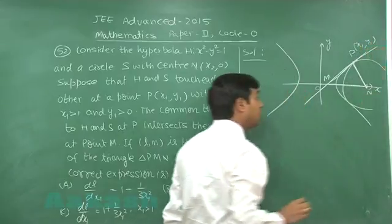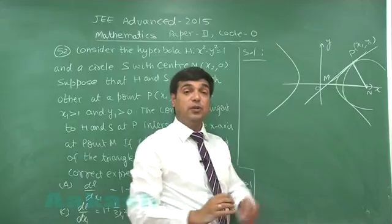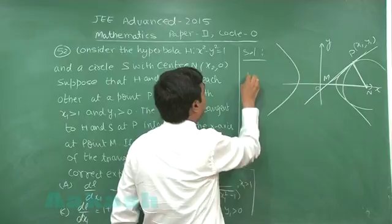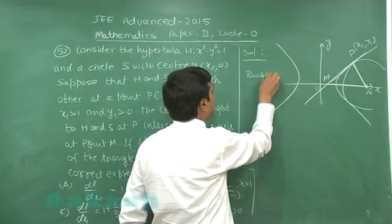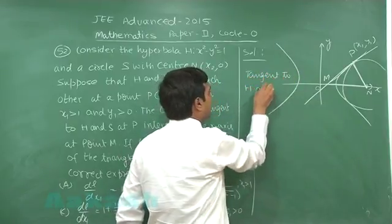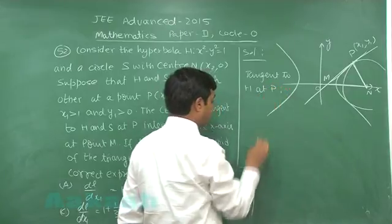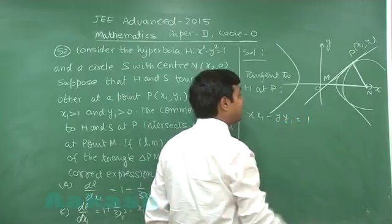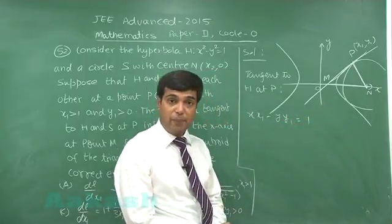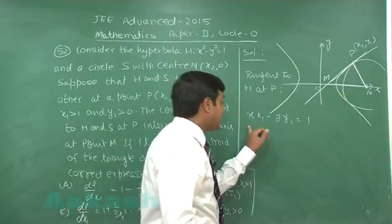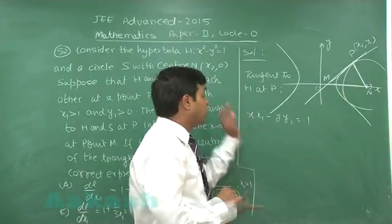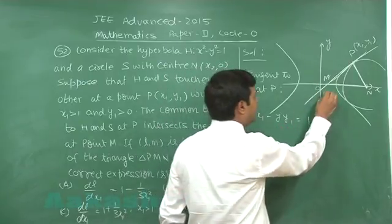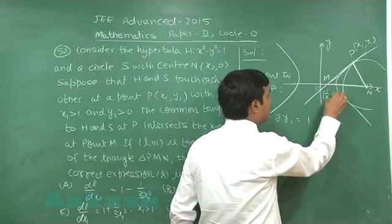We write the equation of the tangent to the hyperbola H at P. The tangent to H at P is: x·x₁ − y·y₁ = 1. This tangent is also a tangent to the circle. To find point M, we substitute y = 0 into this equation and obtain M = (1/x₁, 0).